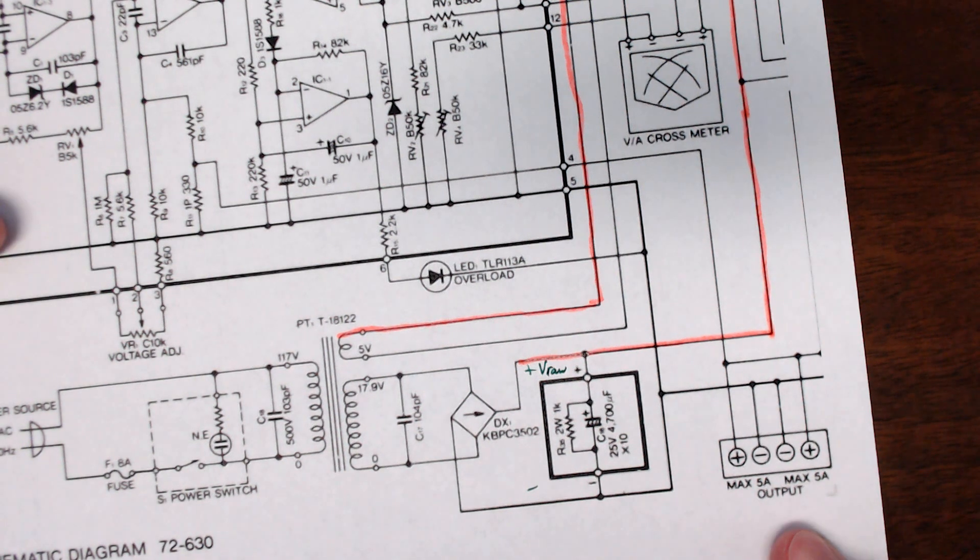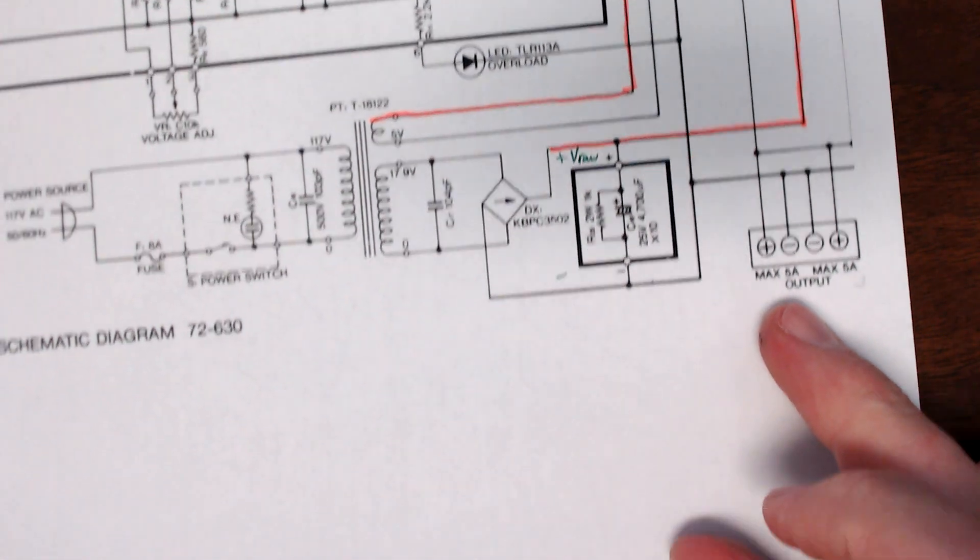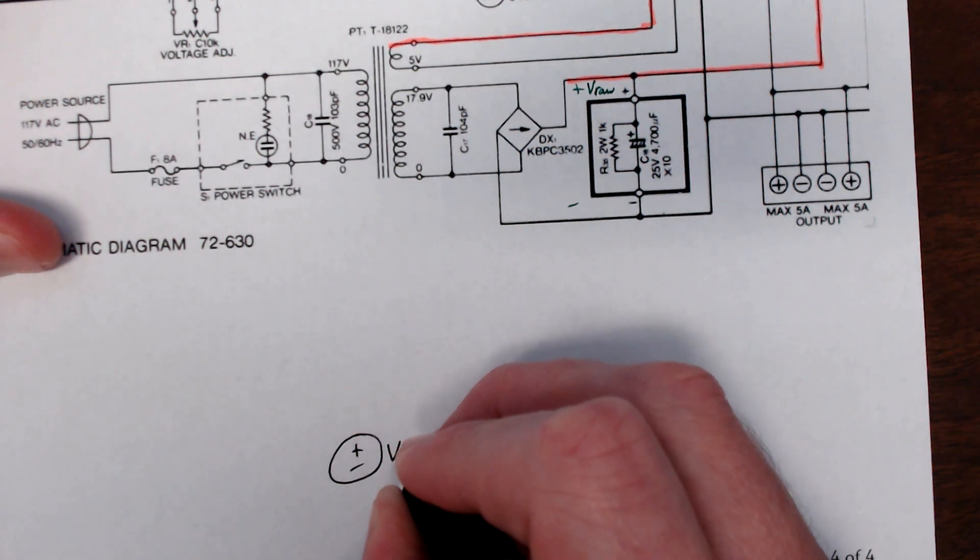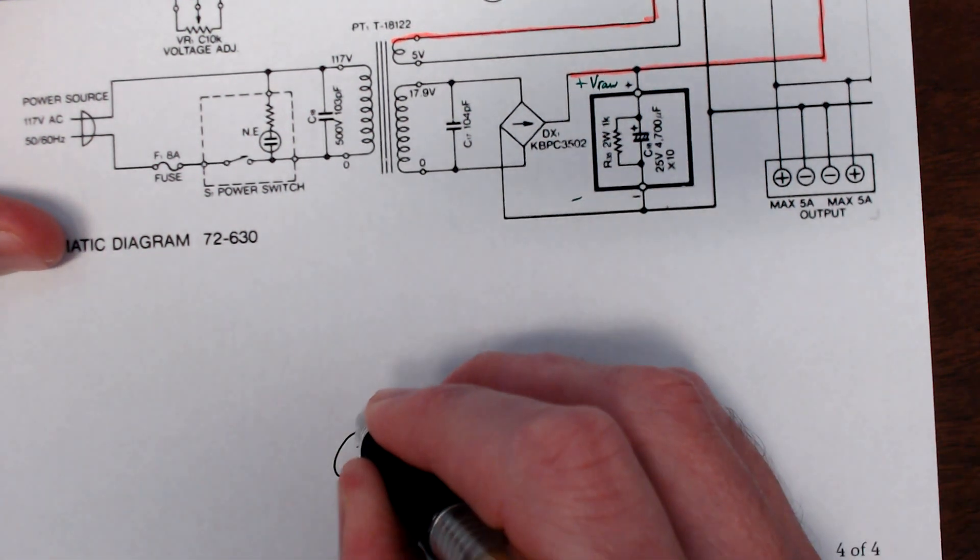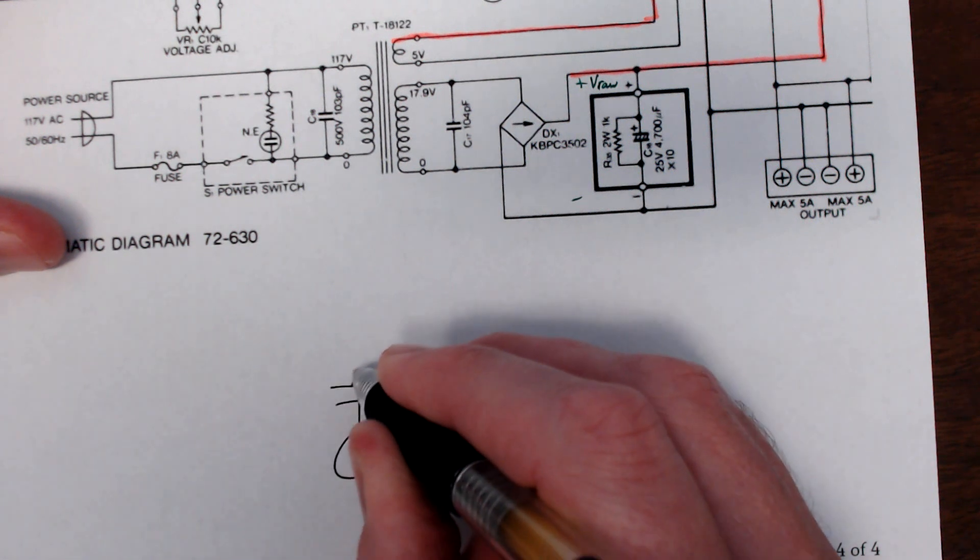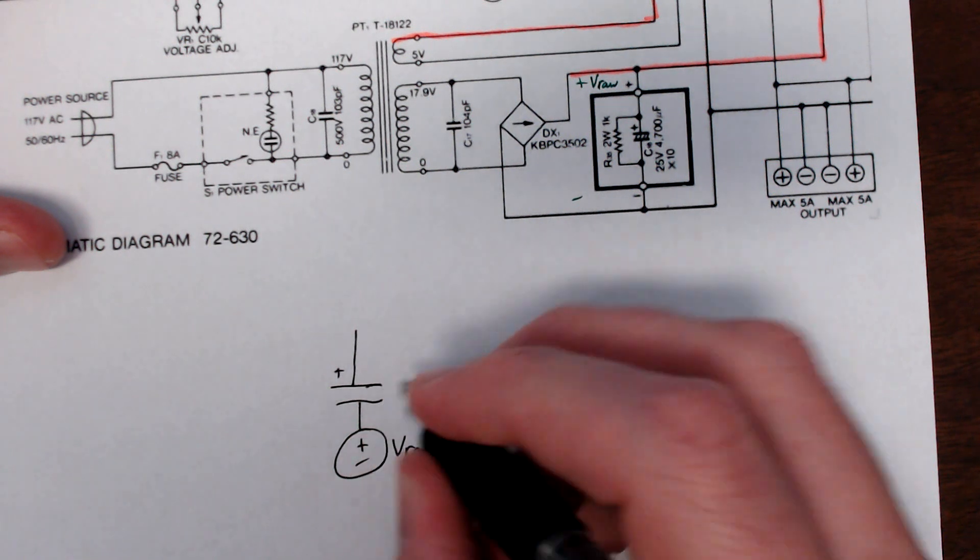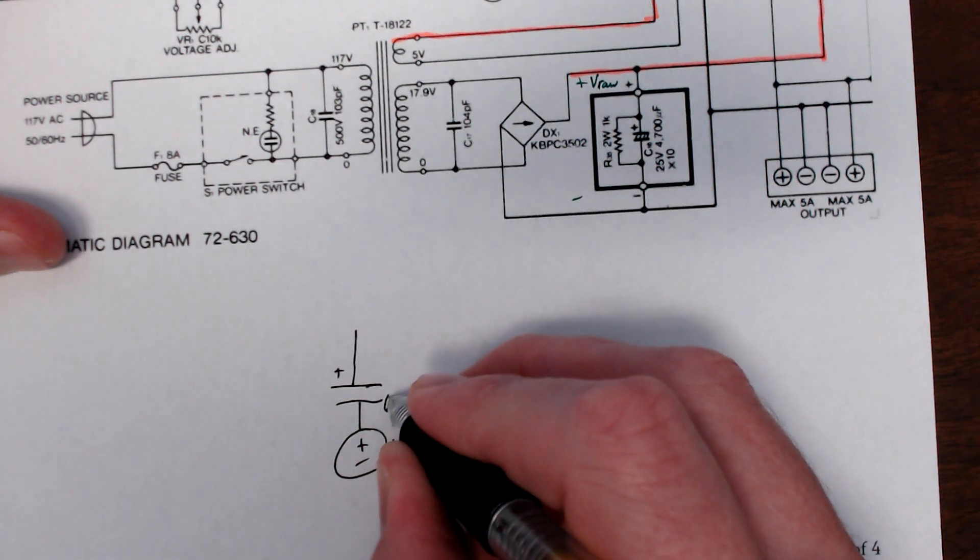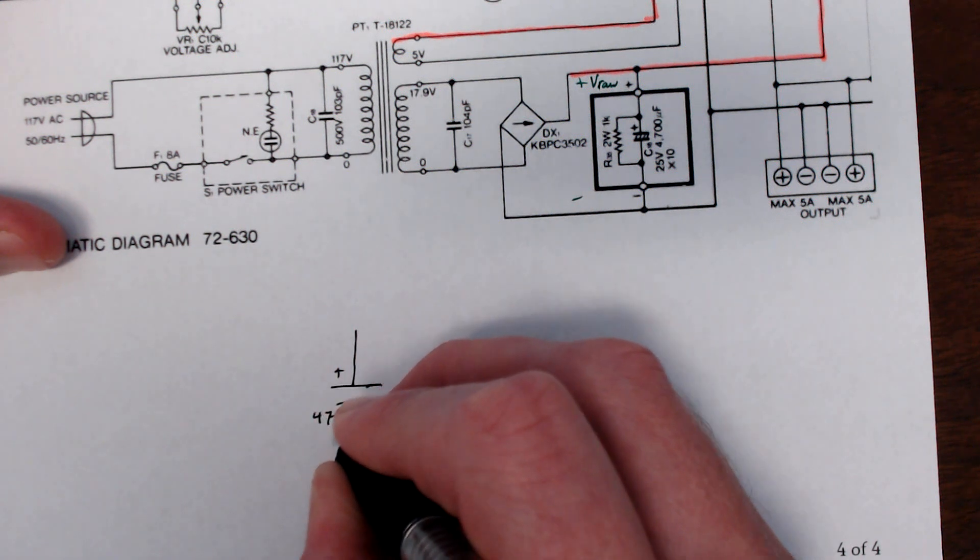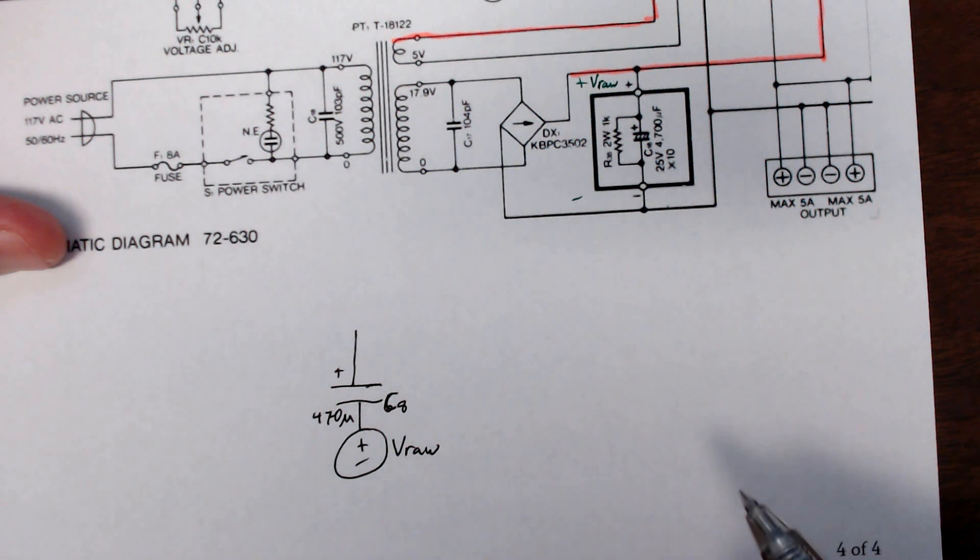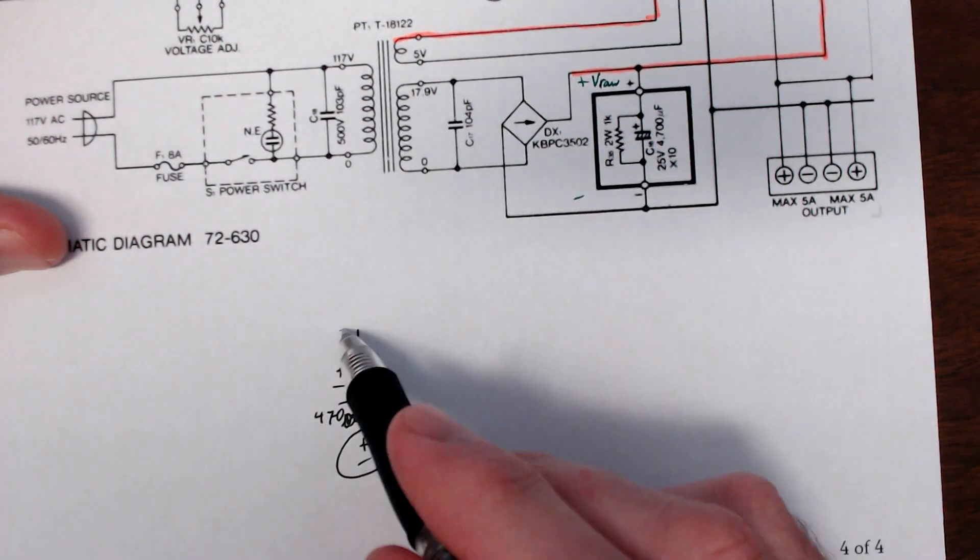I'll draw this schematic down here a little better so we can see what this is. So we have, here's VRAW. Here's that capacitor. This is how we just determined that this capacitor was here. I'll call it C8, 470 micro. I'll just use a U, whatever, it doesn't matter. So we have this one on top.